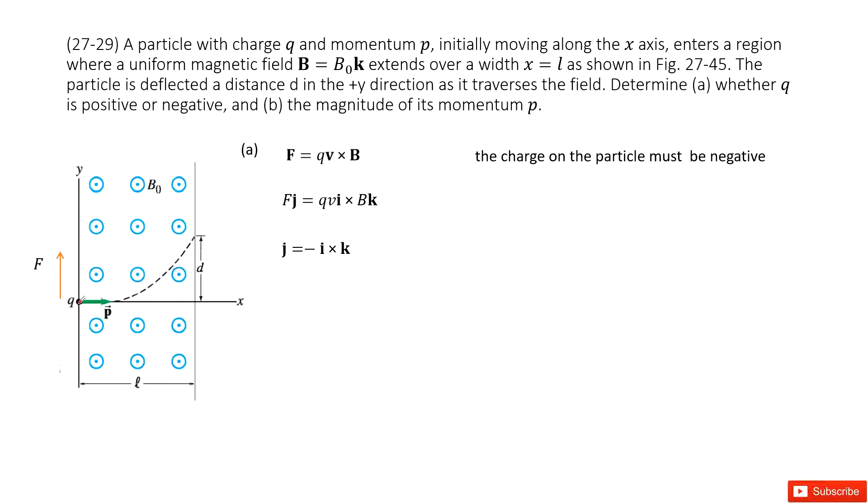We can see for the charged particle in the magnetic field, it does circular motion. When this charged particle is there, the momentum p is pointing to the x component. So of course, the Lorentz force will point up, pointing to the center of the circular motion. So we can see this Lorentz force equals q v cross B.